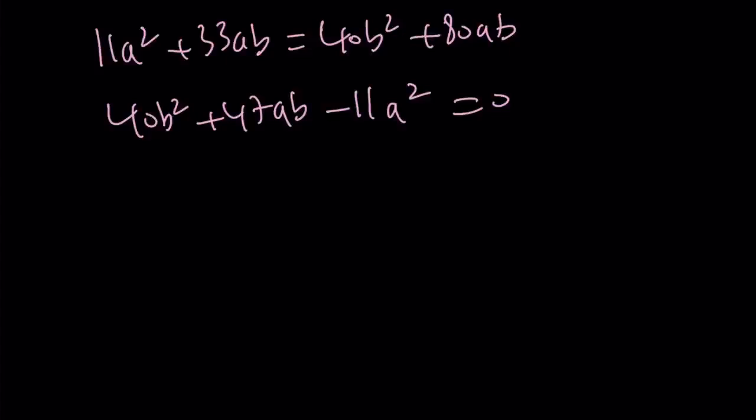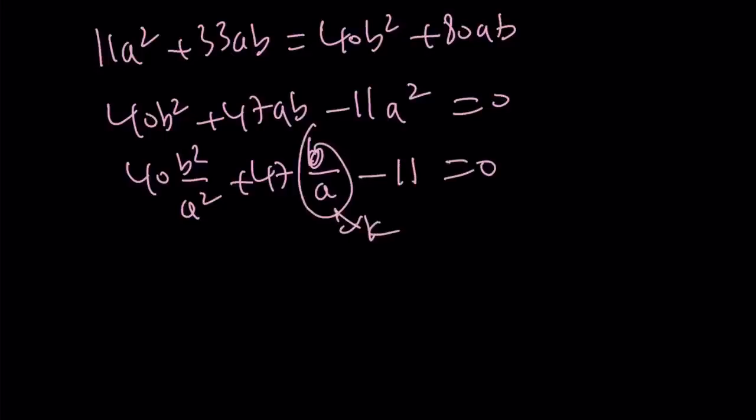As before, you know that k equals negative 11 eighths. What is k though? Here's what we're going to do for k. I'm going to divide both sides by a squared. If you divide ab by a squared, you get b over a. If you call this k, you get the same thing. 40k squared plus 47k minus 11 equals 0.